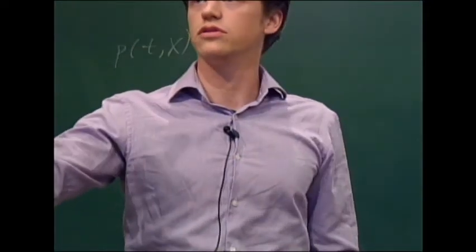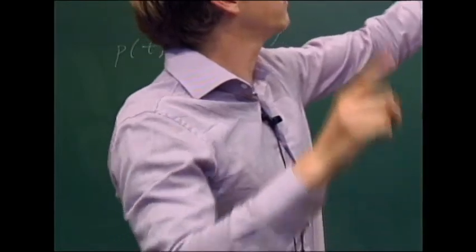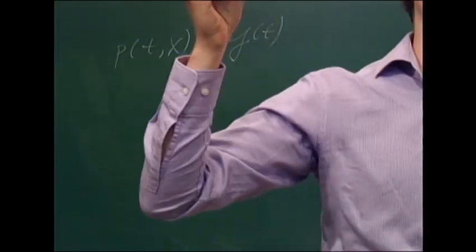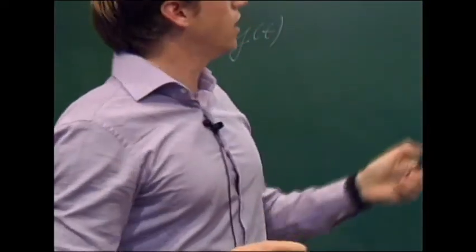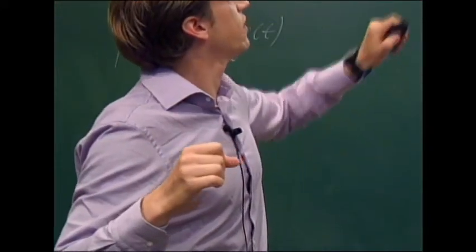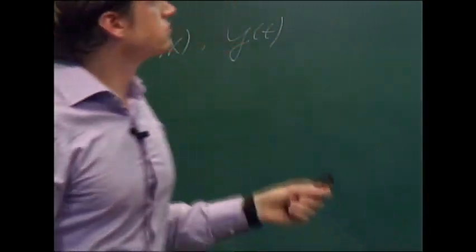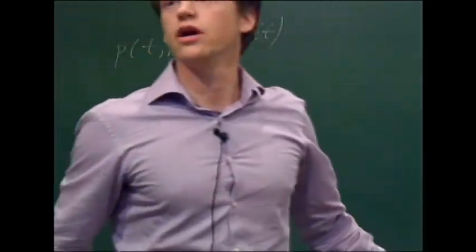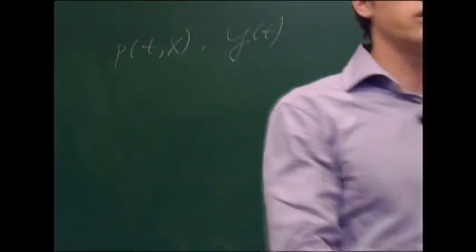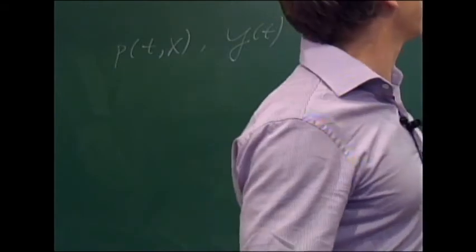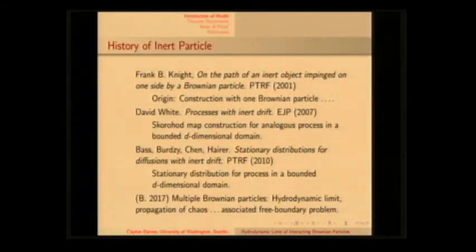The original construction with one Brownian particle began with Frank Knight, who did one Brownian particle and studied the velocity process of the massive barrier. David White in 2007 came up with the Skorokhod map construction, which is more general. Birdsey, Bass, Chen, and Herrer proved the stationary distribution for the d-dimensional analog. In this talk, I'm going to be discussing this hydrodynamic limit and the multiple Brownian particle analog of this.